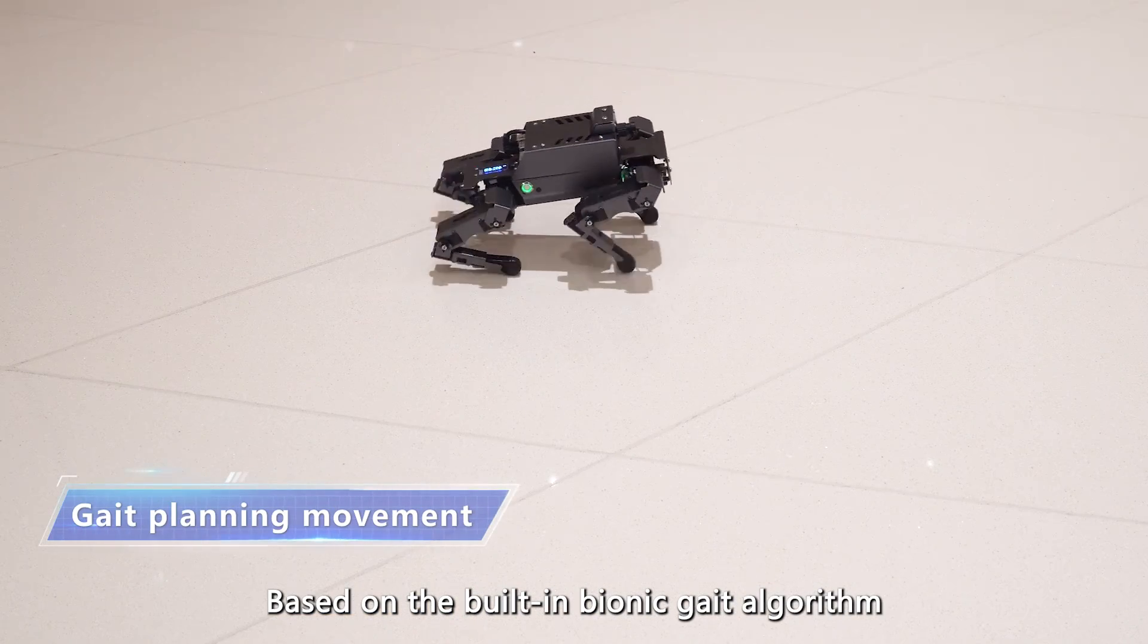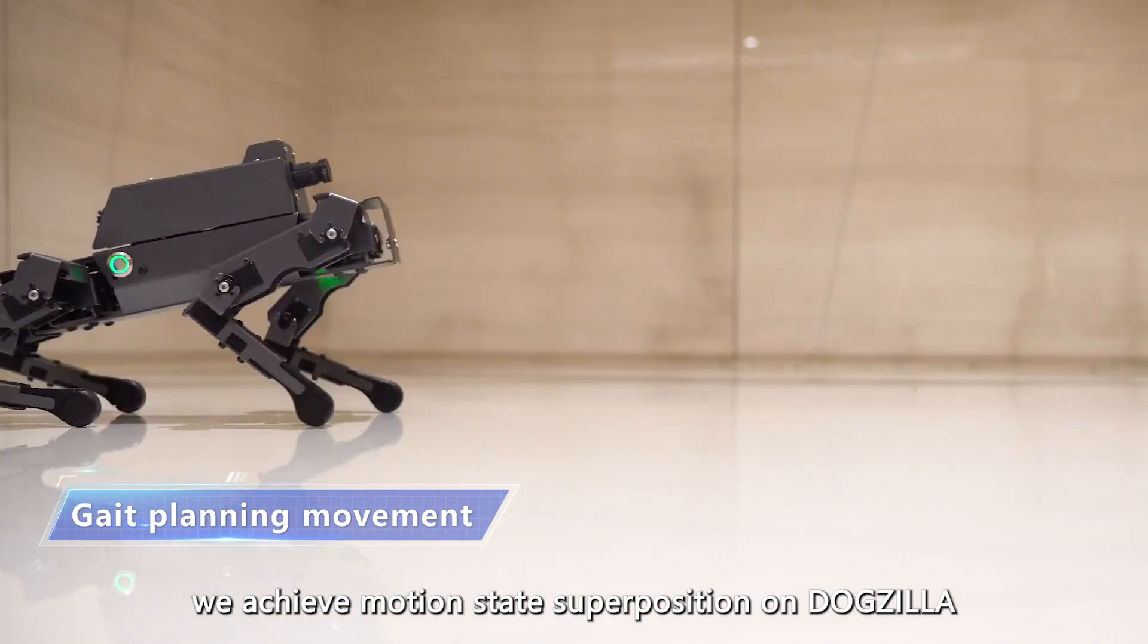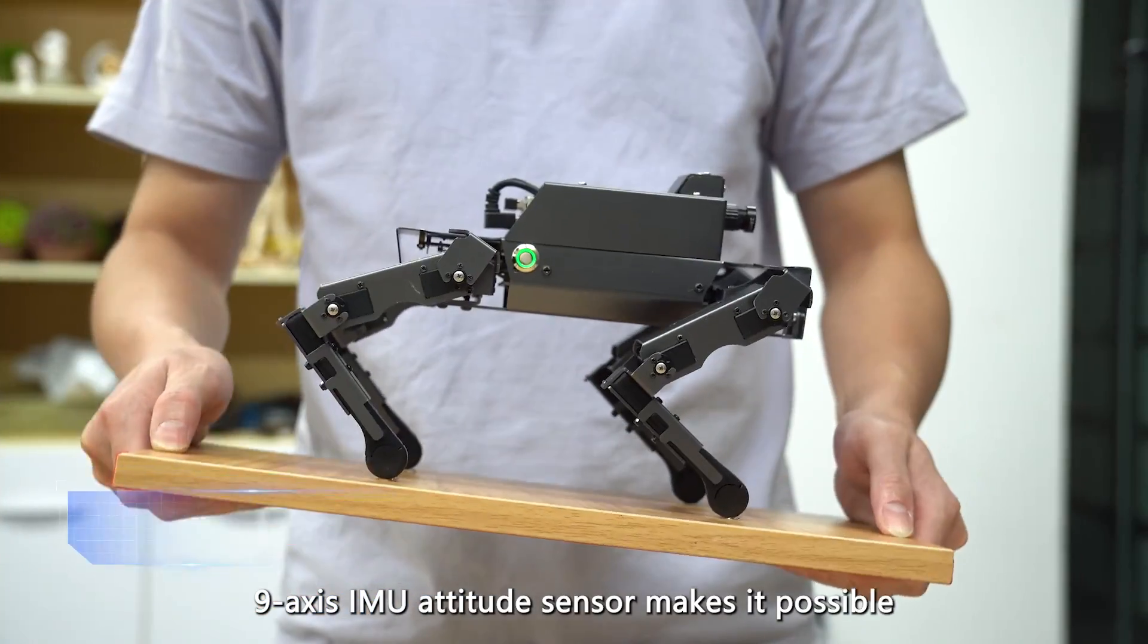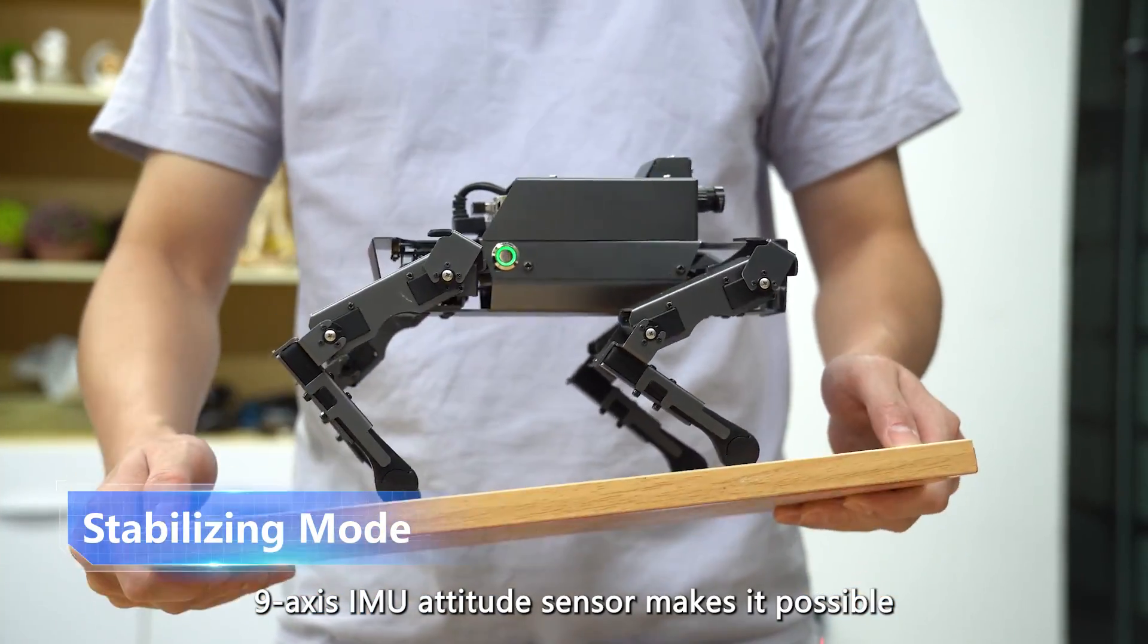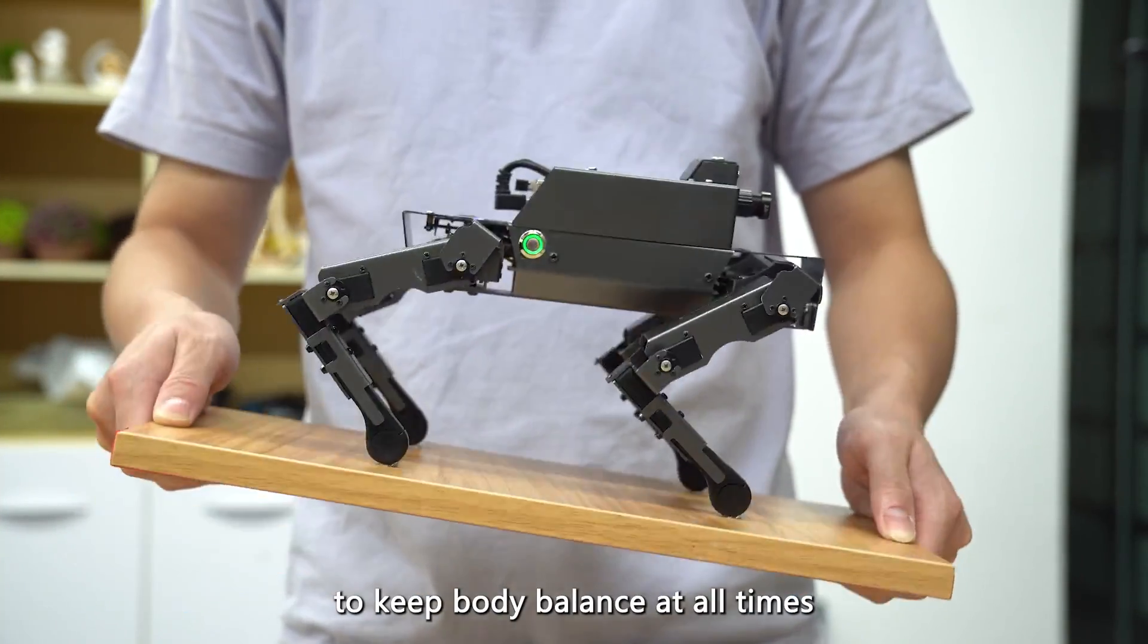Based on the built-in bionic gait algorithm, we achieve motion state superposition on Dogzilla. A nine-axis IMU attitude sensor makes it possible to keep body balance at all times.